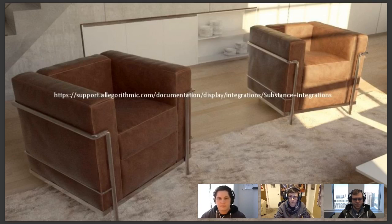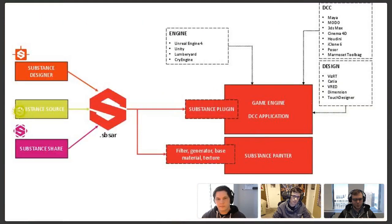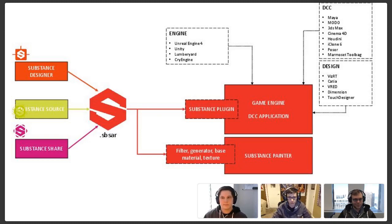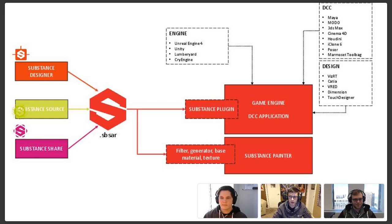In that space we have sections explaining the Substance format, and how to hook up different connections to third-party renderers. The flow chart shows our core solutions — Substance Designer, Substance Source, and Substance Share — which can produce or deliver an SBSAR file. That Substance material file can then be imported through a Substance plugin into a game engine like Unreal Engine, Unity, Lumberyard, or CryEngine, or a DCC application like 3ds Max, Maya, and so on.